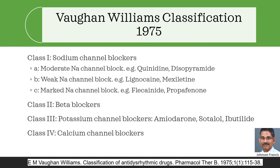All of us are familiar with the Vaughan Williams classification, which was published in 1975. It had four groups: Class 1 consisting of sodium channel blockers, again subdivided into A, B and C; Class 2 consisting of beta blockers; Class 3 of potassium channel blockers; and Class 4 of calcium channel blockers.